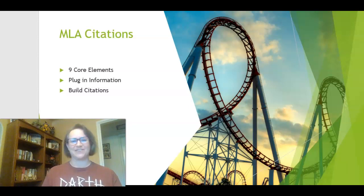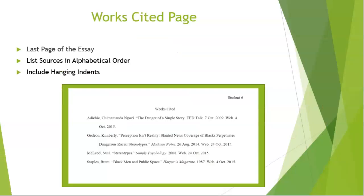Hang on for a wild ride! I do recognize that going over Works Cited information can be boring, so I will do my best and try to keep your attention. The Works Cited page is the last page of the essay and contains a full citation for each of the sources used in the essay. The sources need to be listed in alphabetical order and include a hanging indent. A hanging indent is when you don't indent the first line of a citation, but you do indent all additional lines of a citation.